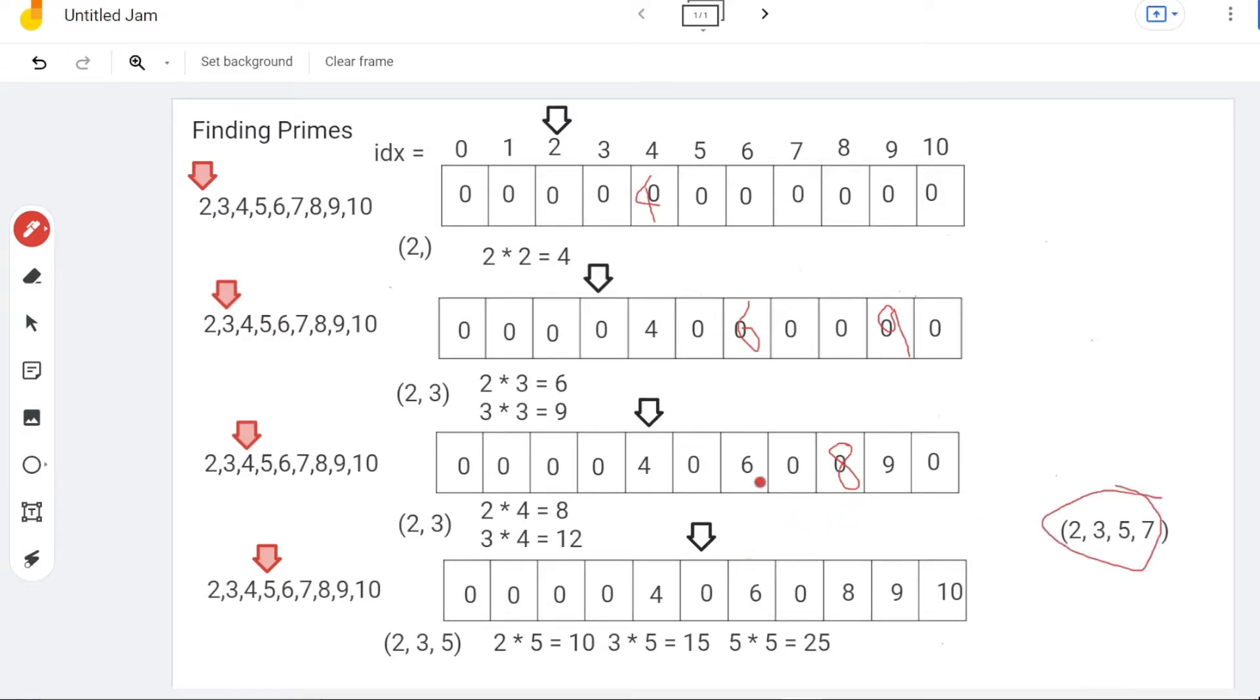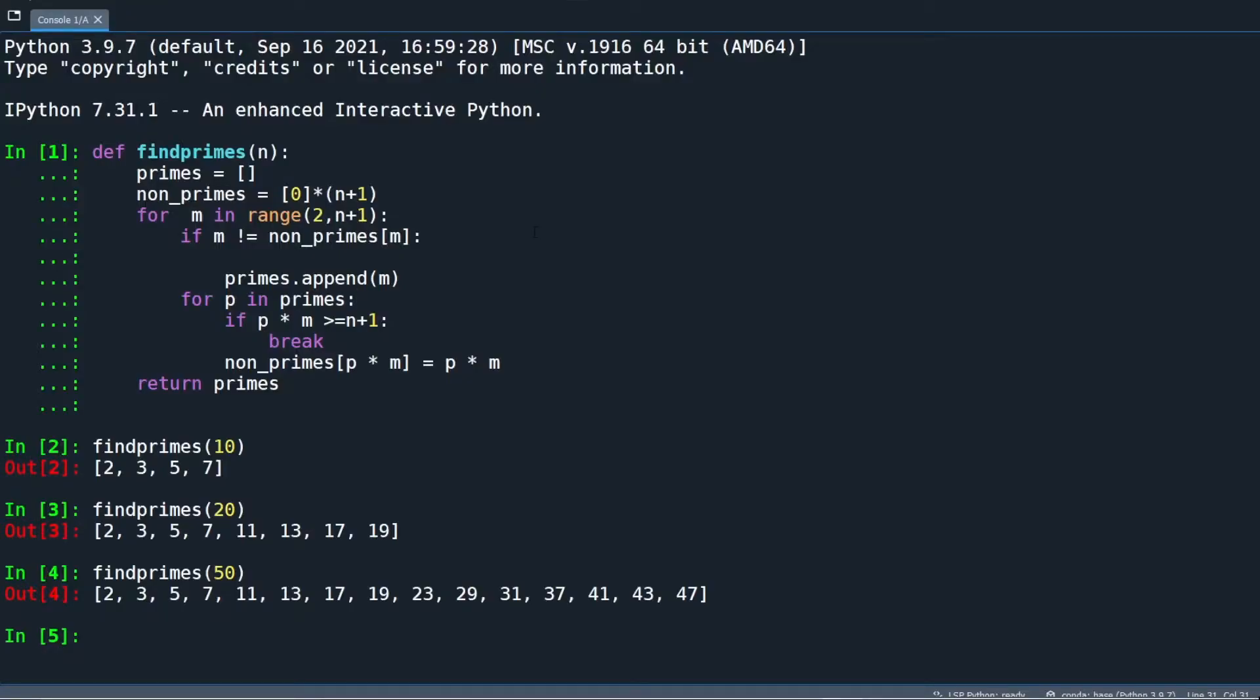All right, let's look at the code implementation. We need two lists, one for storing primes and the other for tracking the removed non-primes. If the removed non-primes outside our interest range, we don't update the tracking list, but go to the next searching number.